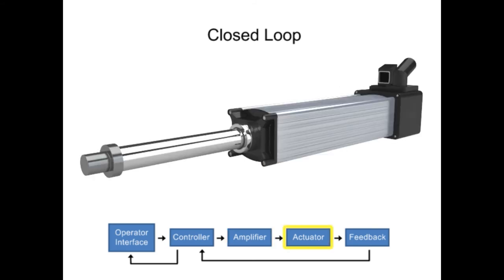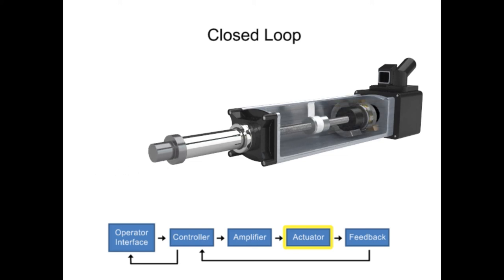The actuator is defined as a motor, cylinder, or other electromechanical device used to create motion. Linear actuators used in industrial applications convert rotary motion to linear motion by turning the actuator nut to move the screw in a straight line.